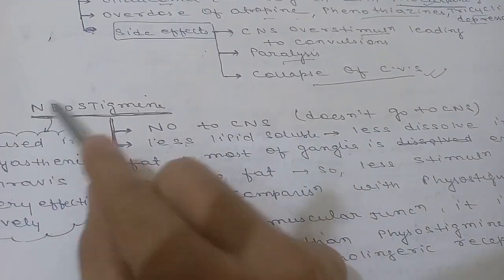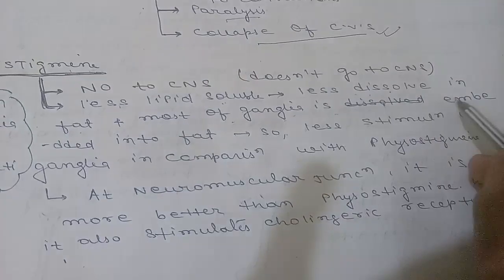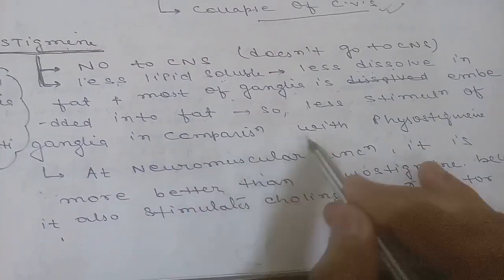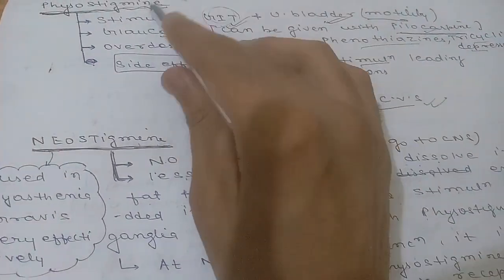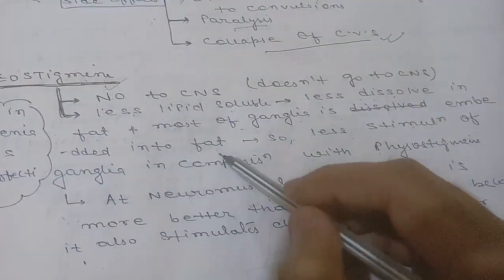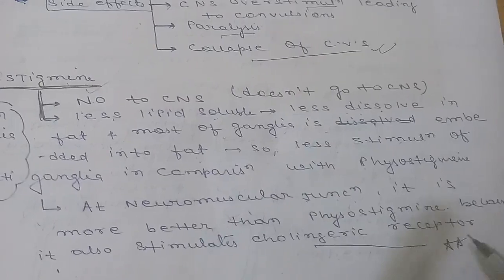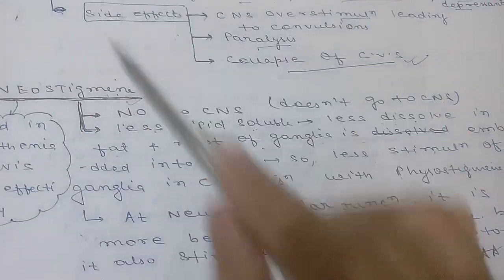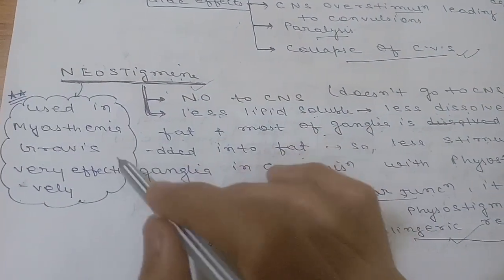Neostigmine does not cross the CNS because it is less lipid soluble. Most ganglia are embedded in fat, so neostigmine causes less stimulation of ganglia compared to physostigmine. However, at the neuromuscular junction, neostigmine performs better than physostigmine because it can also stimulate nicotinic receptors in addition to its anticholinesterase activity. At the ganglia level, it is less effective than physostigmine.